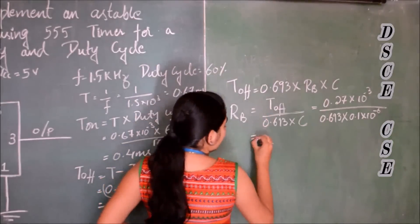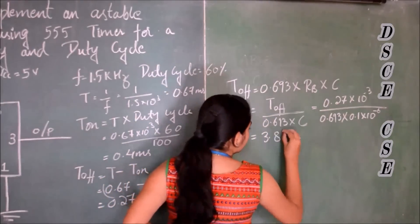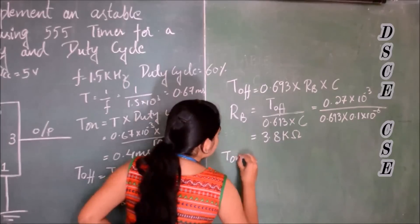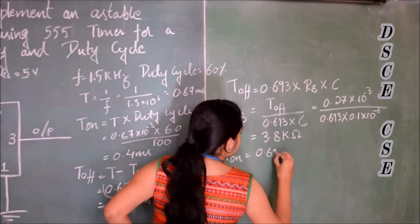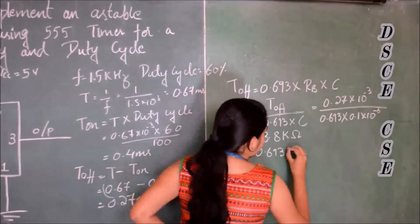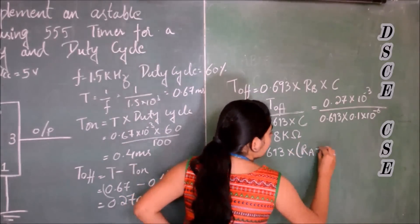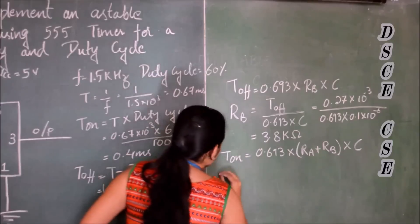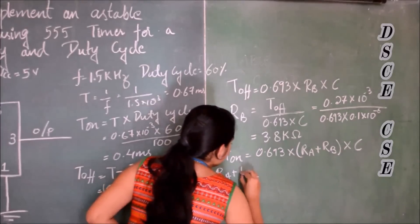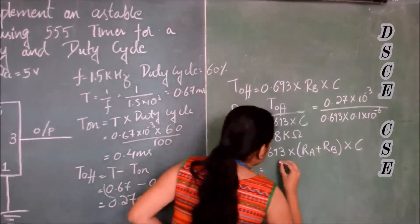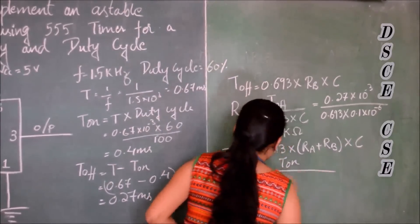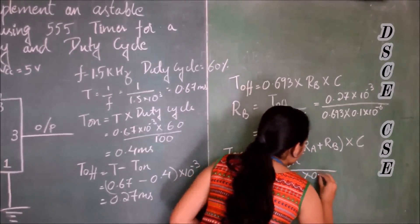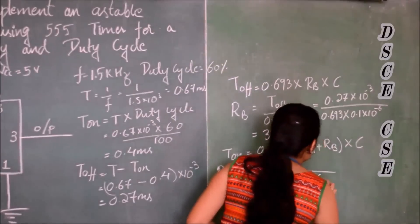So the value of RA will be approximately equal to 3.8 kilo-ohms and T_off is equal to 0.690 into RB into C. So RA plus RB will be equal to T_off divided by 0.690 into C.